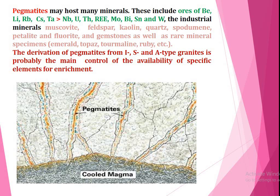Gemstones as well as rare earth specimens, i.e. emerald, topaz, tourmaline, ruby, etc. The derivation of pegmatites from I-, S- and A-type granites is probably the main control of the availability of specific elements for enrichment. This is the picture of the felsic magma which crystallizes into pegmatites in the form of pegmatitic veins.